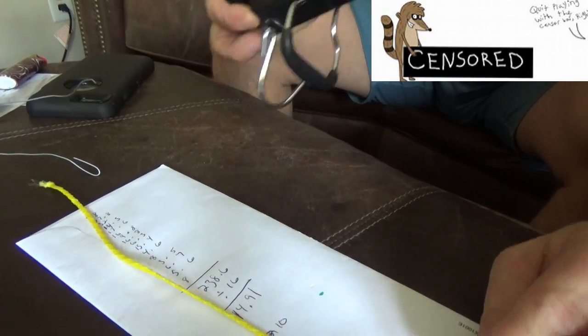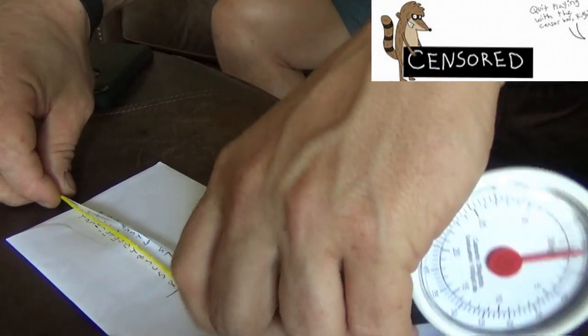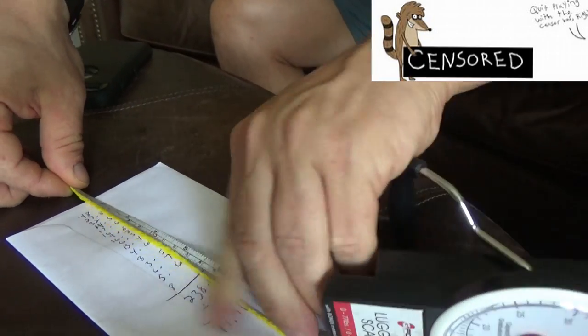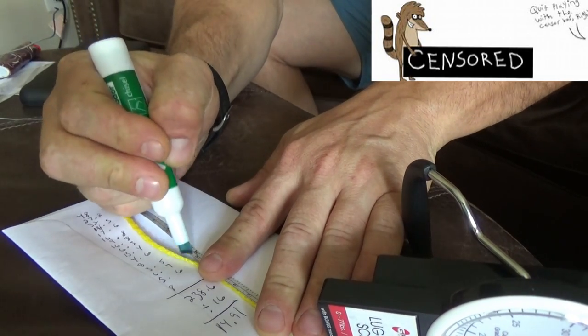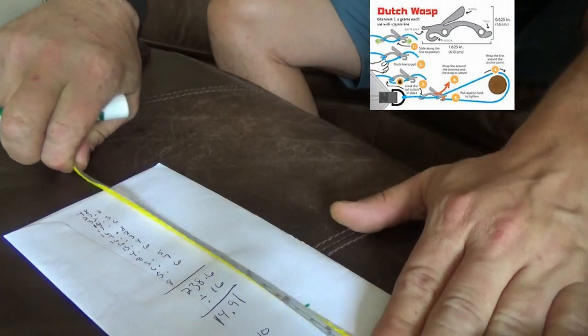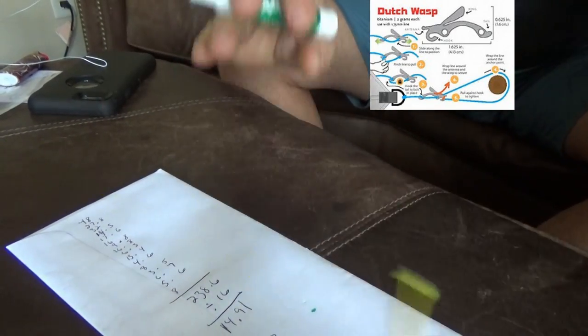And then from here I want to measure, you want four inches but from the end we're going to do five inches because of the fray. So there's five inches, mark that bad boy. And then from there you want to go to 11 inches. So there's 11 inches, mark that bad boy.